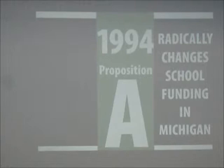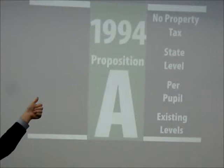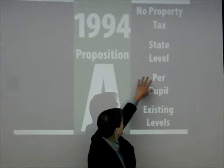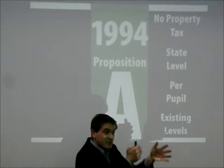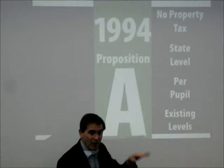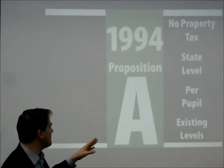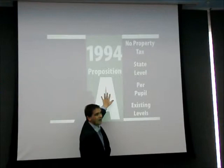Proposition A shifted funding from property taxes to the state level. Instead of distributing by district or school, it distributed by student — with a certain amount of dollars following each student. With some exceptions at the low end, they kept existing levels of funding, raising the bottom up a little but not adding a lot of money overall. It wasn't like Proposition A added a lot of money to schools; it changed where the money came from and how it was distributed.